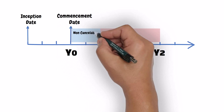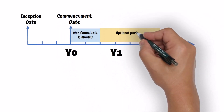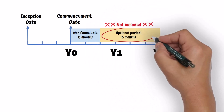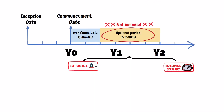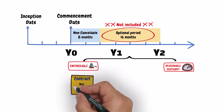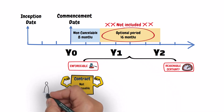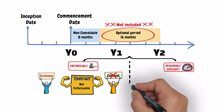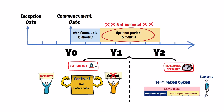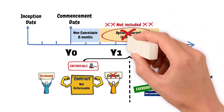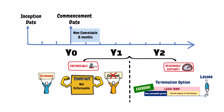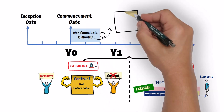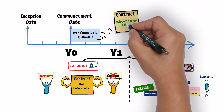The non-cancellable period of the lease term is eight months. The optional period, which is the remaining 16 months, is not included in the lease term because the two conditions for that are not satisfied. First, the lease is not enforceable during the optional period because the lessee can terminate the lease during the optional period without the lessor's consent. And second, there is a reasonable certainty that the lessee will terminate the lease during the optional period. So the optional period is not included in the lease term, and the lease term is only eight months of the non-cancellable period. Since the lease term is less than one year, the agreement qualifies as a short-term lease.